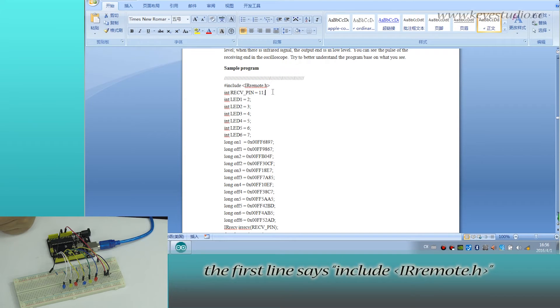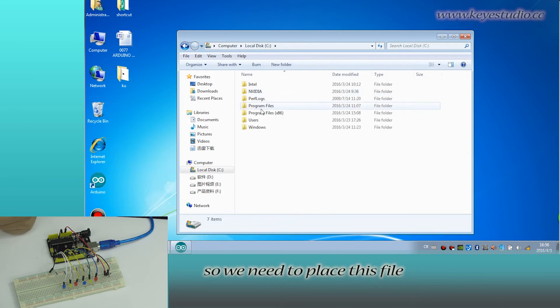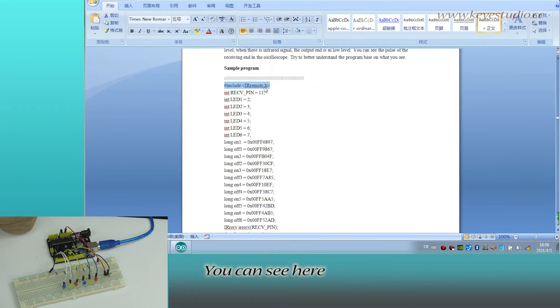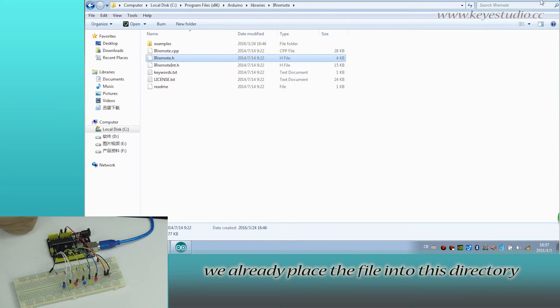The first line says include IR remote.h. So you need to place this file under the directory libraries of Arduino. You can see here we already placed the file into this directory.